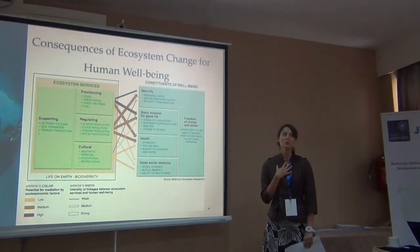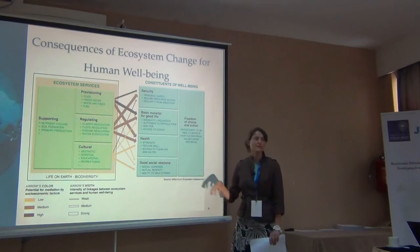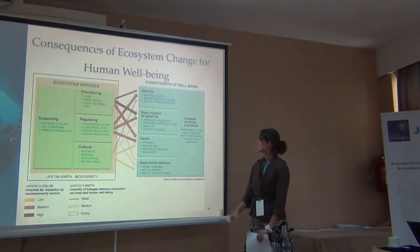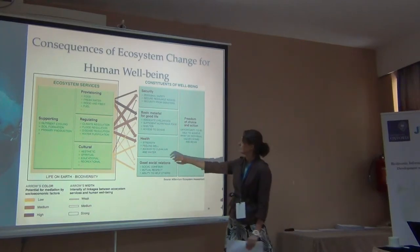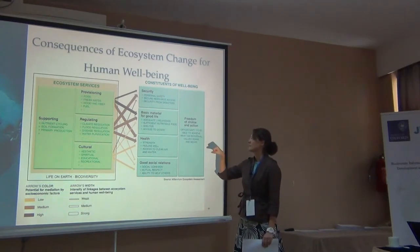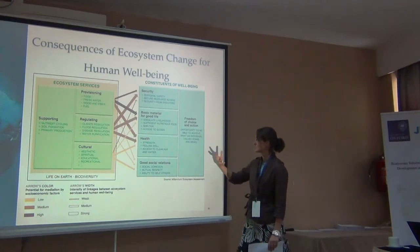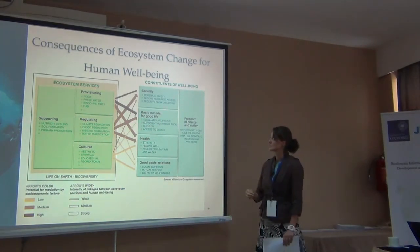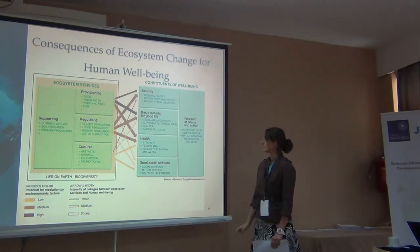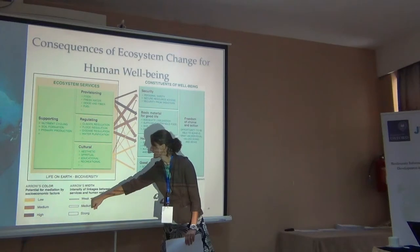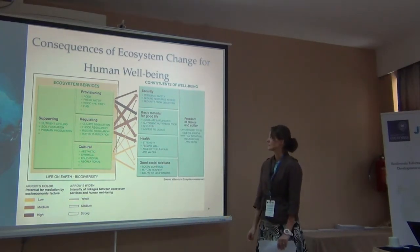Why do we care about these ecosystem services? When you're thinking about humans and their well-being, there are rather direct connections between many of these ecosystem services and what the Millennium Ecosystem Assessment calls constituents of well-being. If you have enough food, shelter, and livelihoods that provide income for you and your family to be secure, and all of those things come from particular ecosystem services, that makes your life better. Some of the links are weaker — delineated by the width of the arrow — but they're still present and we should talk about them.